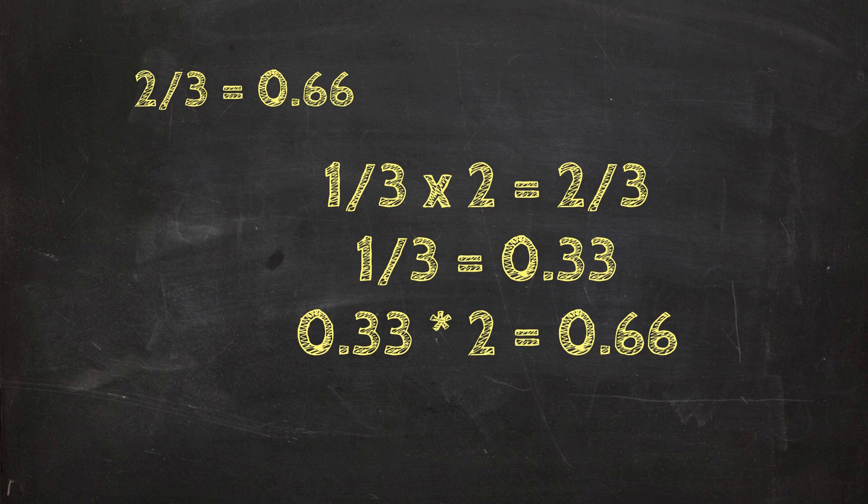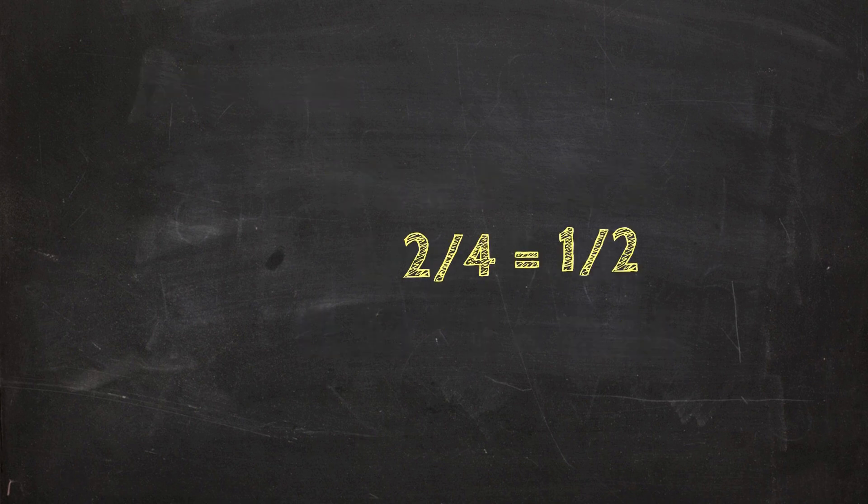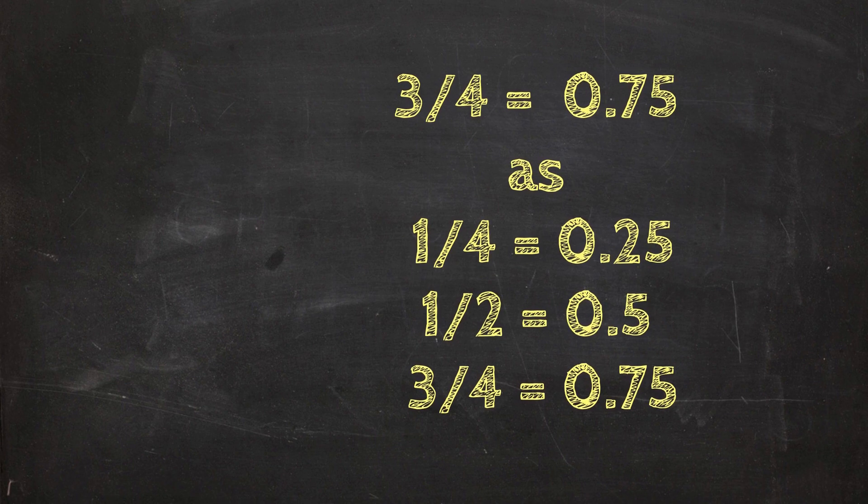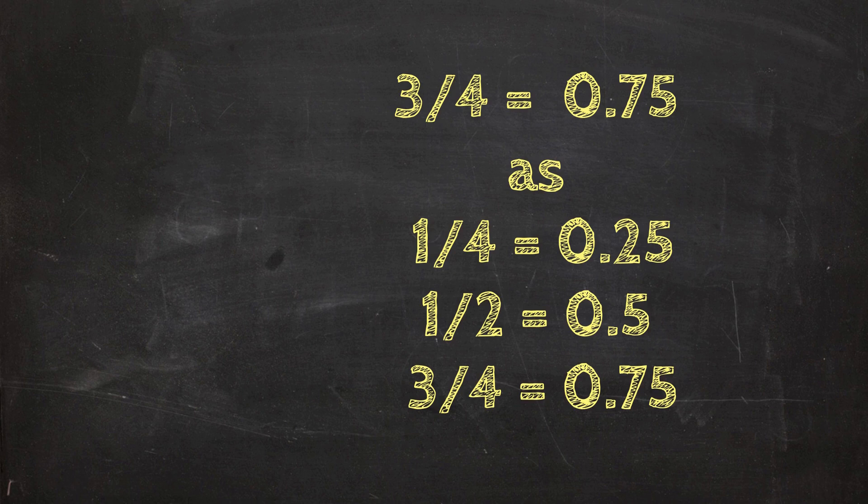Remember that two quarters equals one half, so three quarters equals 0 or 0.75. Because, well, one quarter equals 0 or 0.25, one half which is two quarters equals 0 or 0.5, and three quarters therefore equals 0.75 or 0.75.